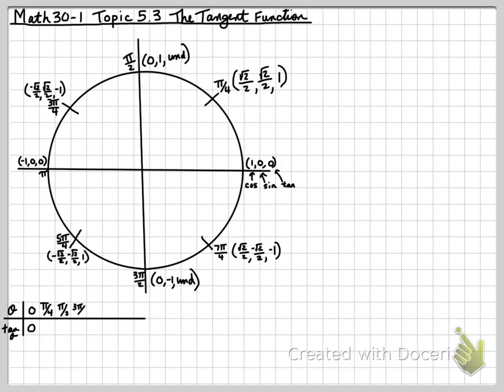So now, if we plotted these points, you're going to see that as we go around the circle, we can see that 0 will be 0, pi over 4 is 1, pi over 2 is undefined, 3 pi over 4 is negative 1, and it repeats that pattern: 0, 1, undefined, negative 1.